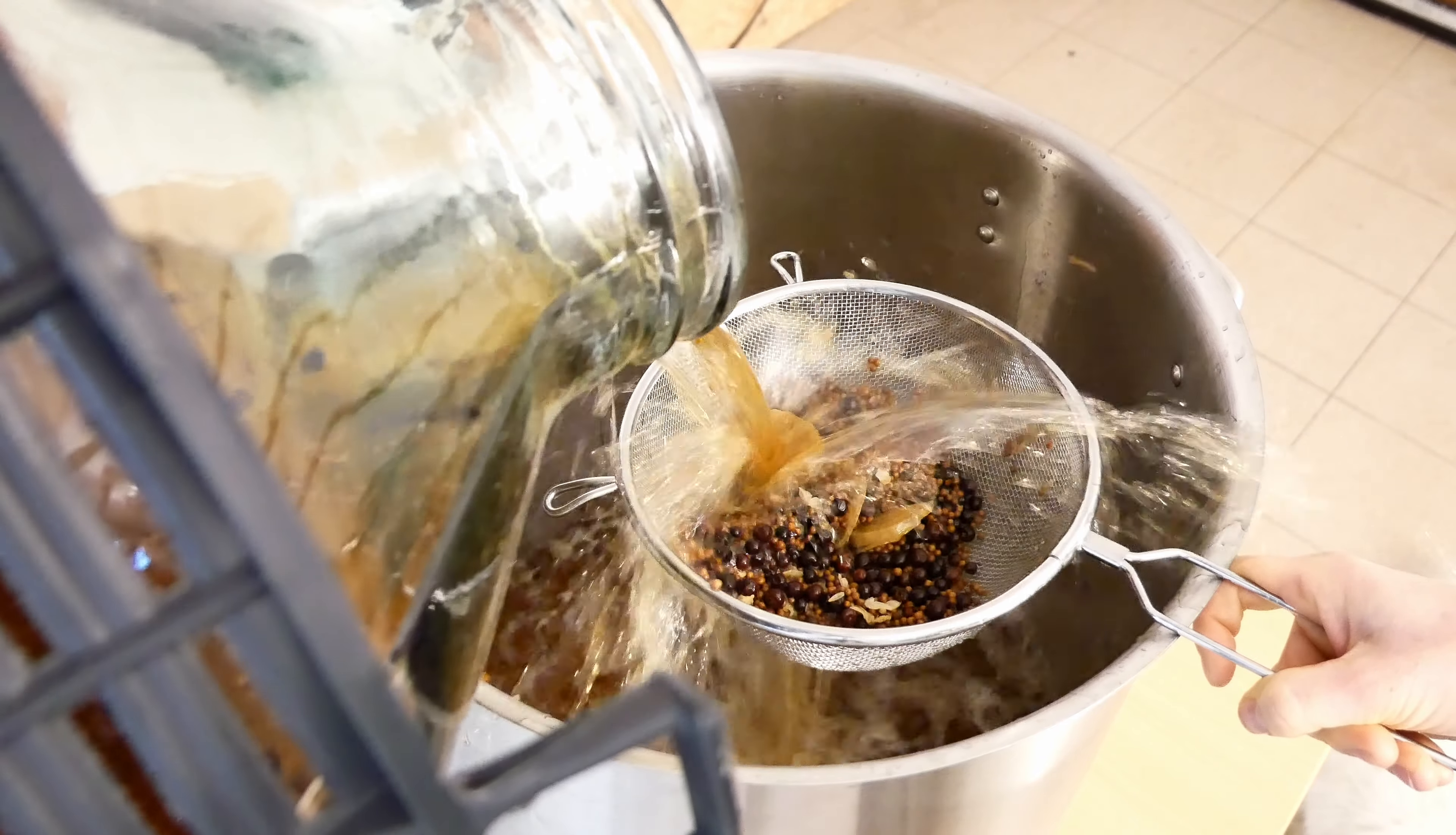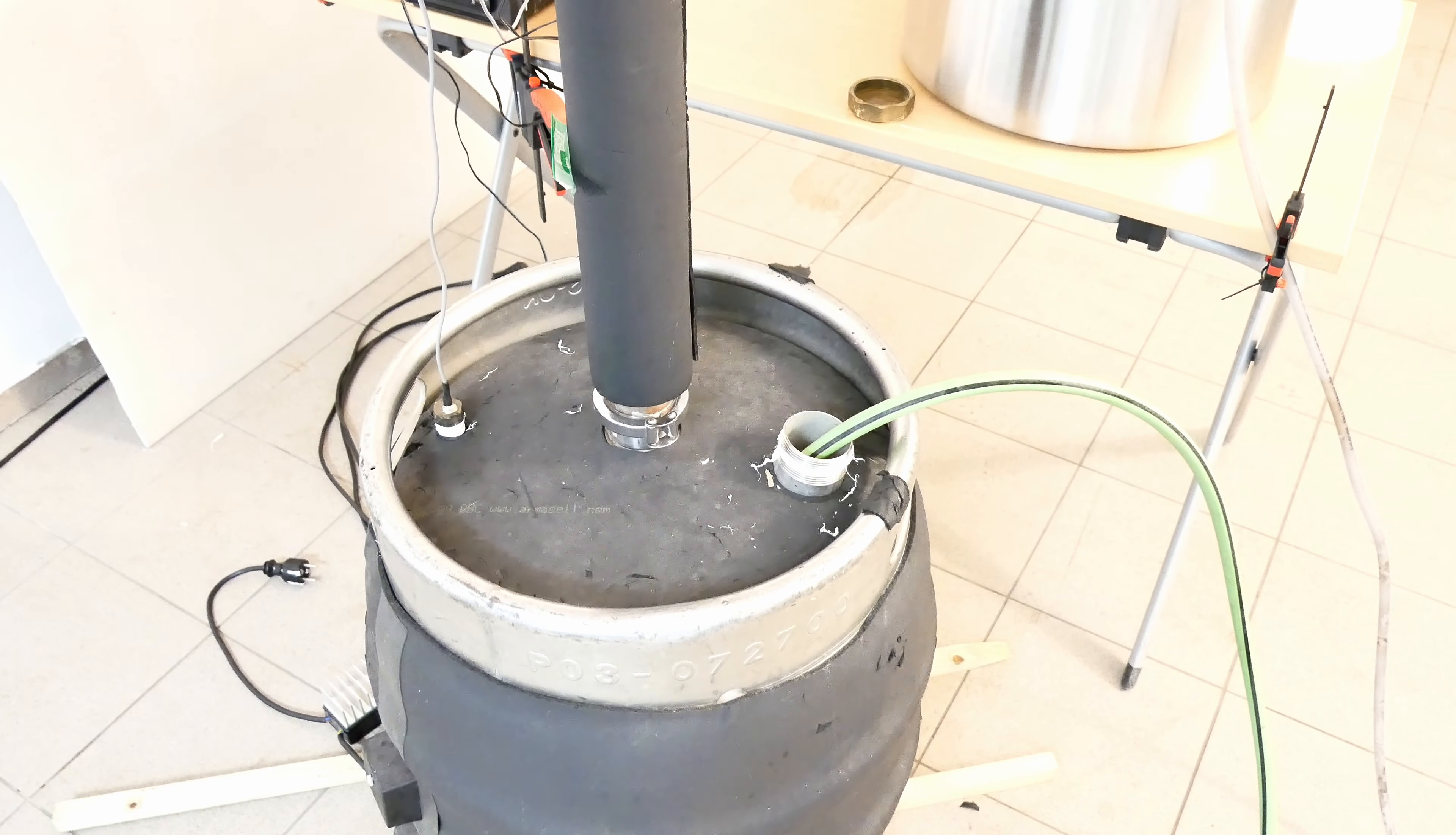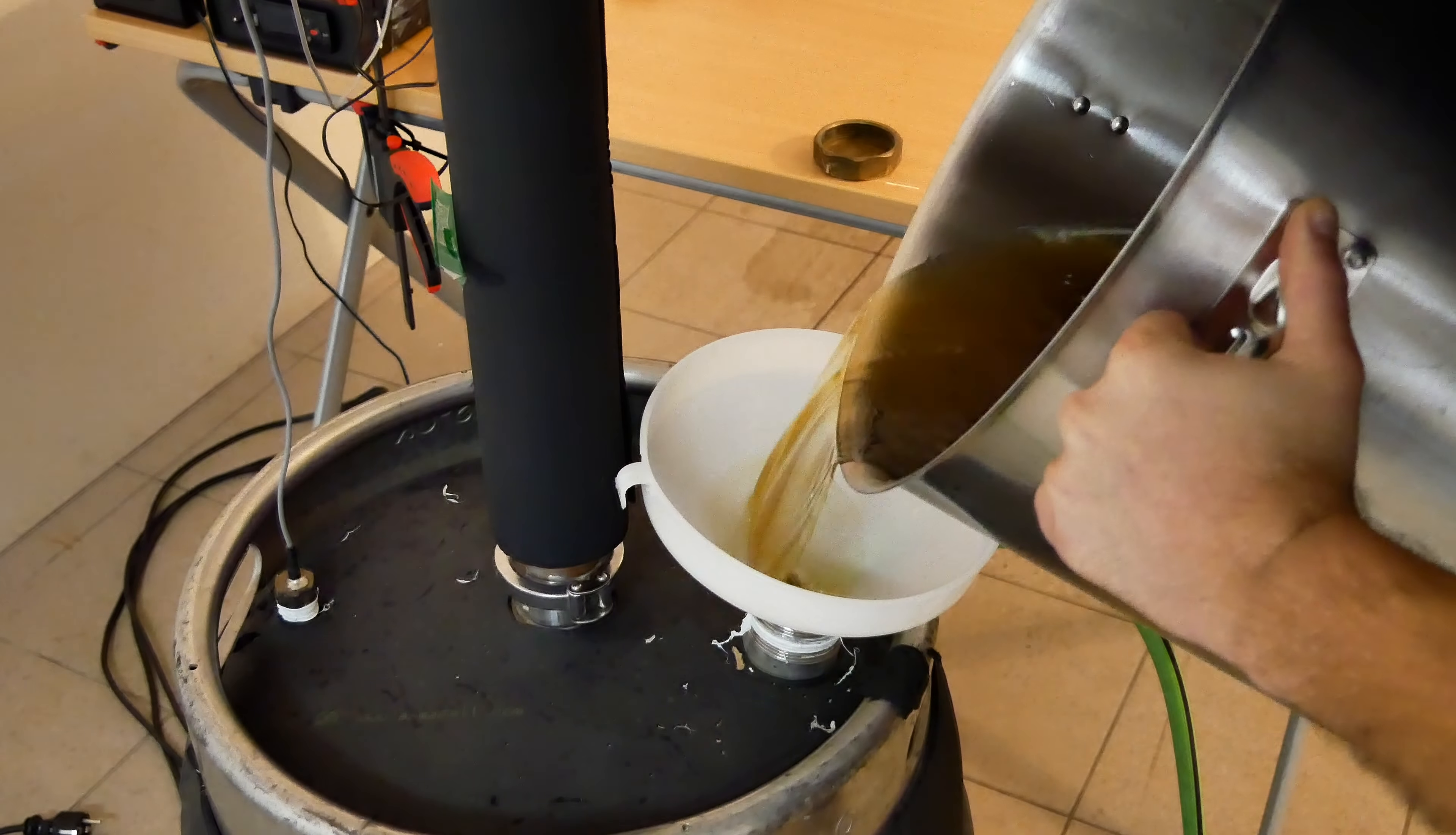Always pay attention to how much wash you have to distill. For proper operation the heaters must be flooded with liquid. So in this case first pour water into the boiler until the lower heater is submerged under water. We must remember that during the distillation all the alcohol and some of the water will evaporate from the boiler and the bottom heater must be immersed in the liquid during the entire process.